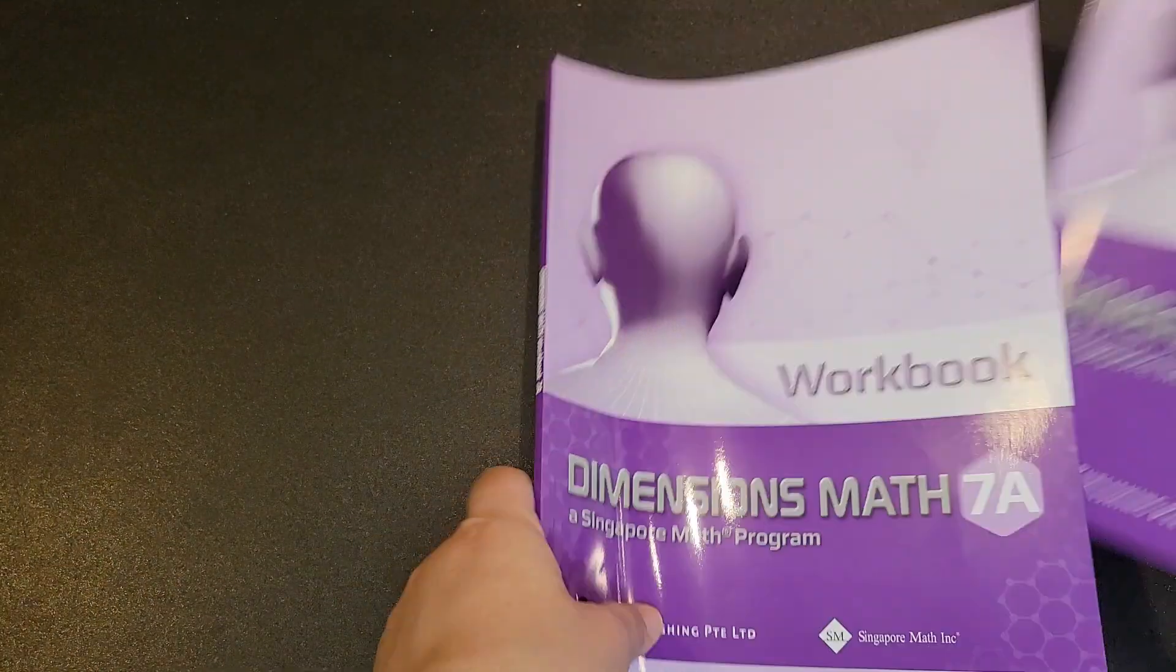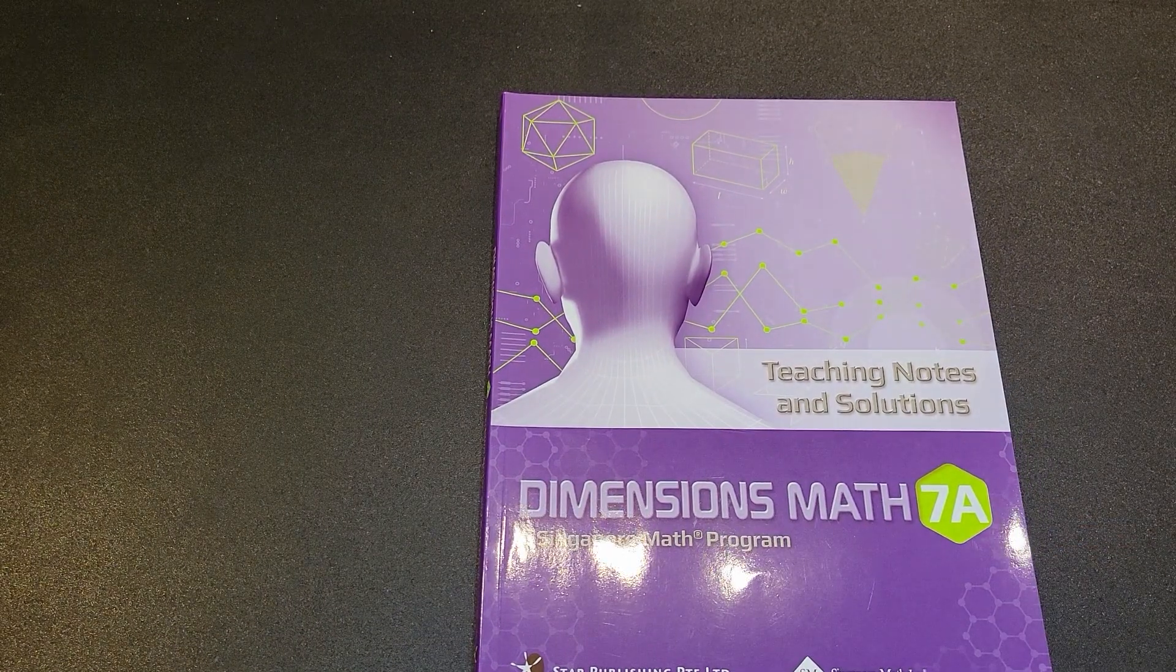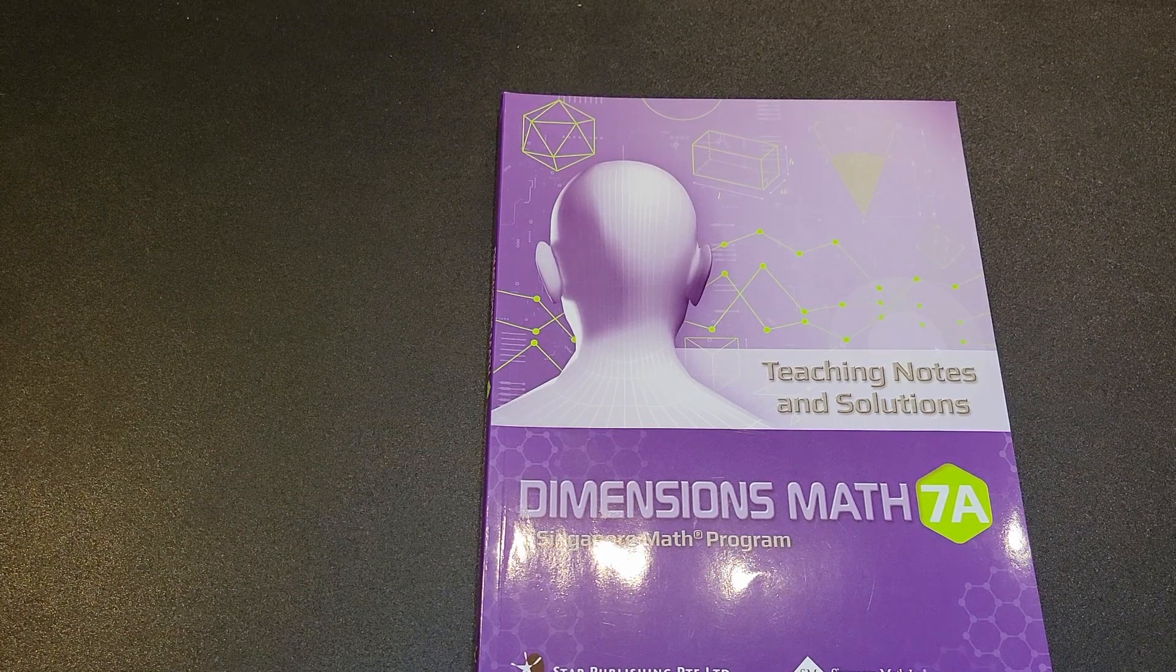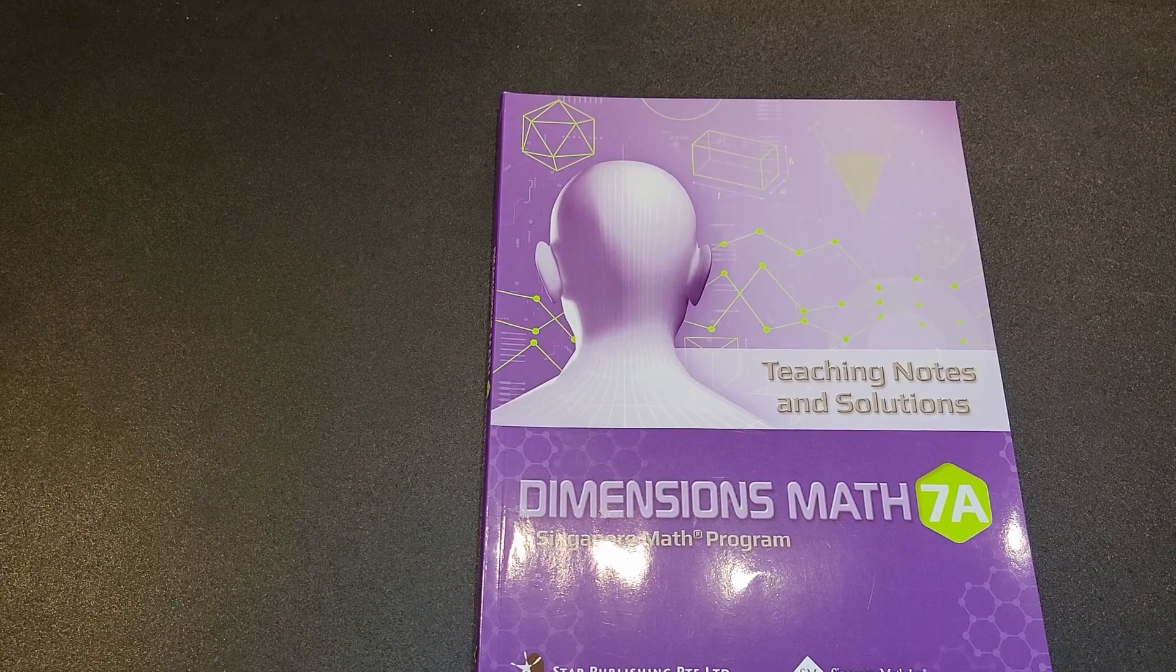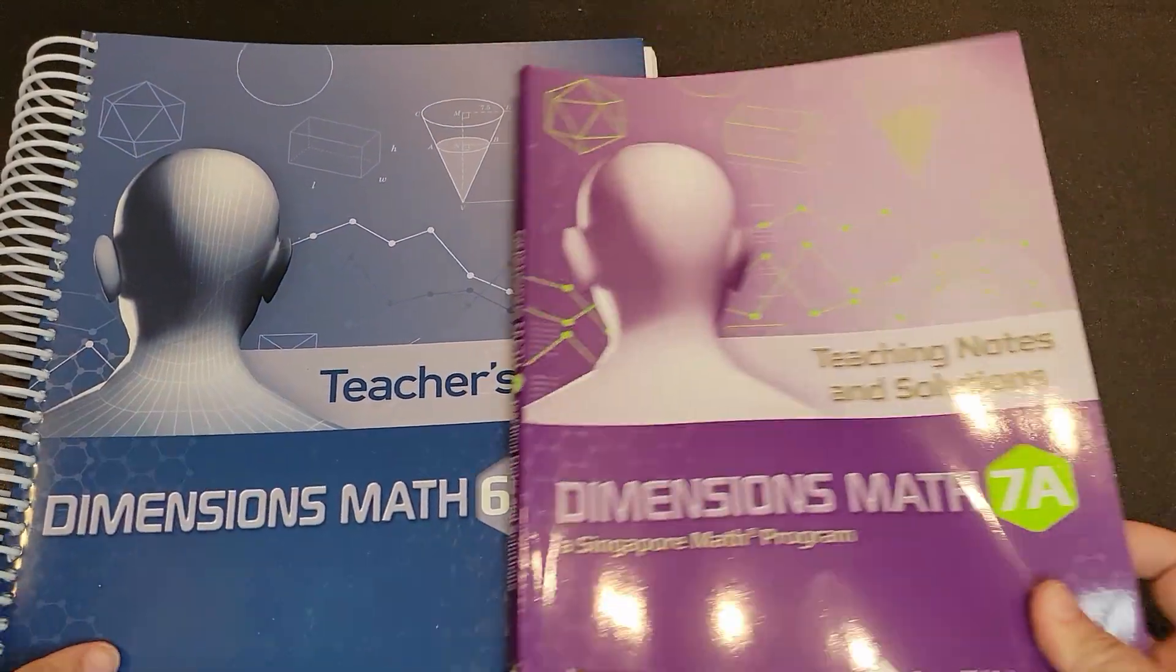So now let's talk about the teaching notes and solutions, because this is absolutely the biggest change of what you're going to see from six to seven. And first of all, you can just tell, here's my six teaching notebook. You can tell there's a big difference. This one is spiral bound. It's a lot bigger. It's a lot thicker.